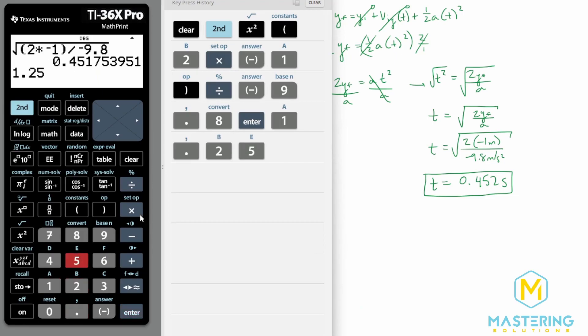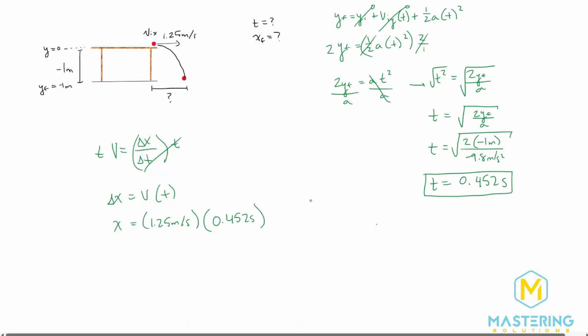So 1.25 times 0.452 gives us a total distance from the edge of the table is 0.565 meters.